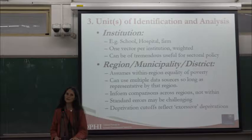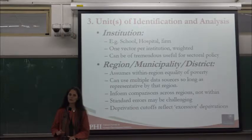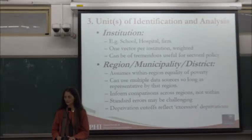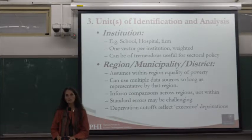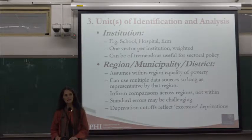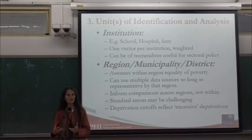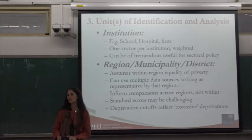One option is to take the institution as the unit of identification — for example, taking the school as the unit with different school indicators as columns in the matrix. Sometimes you don't have household survey data down to local levels, and census data may not include MPI variables, so you may want to combine data sources. In that case you could take a municipality, a district, or a data zone as the unit of identification.